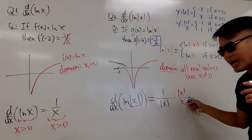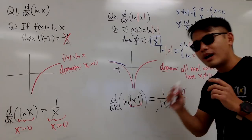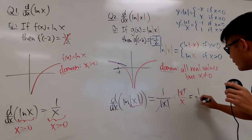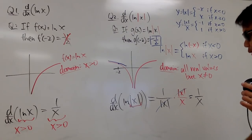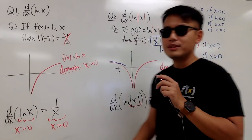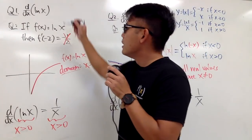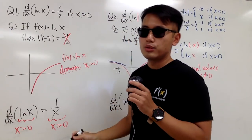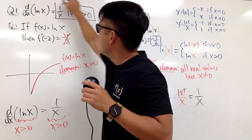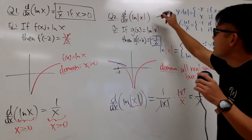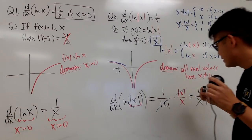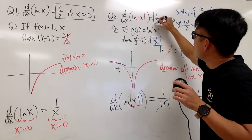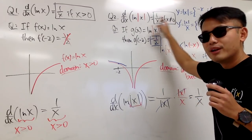So putting it together: the derivative of ln of absolute value of x gives 1 over absolute value of x, multiplied by absolute value of x over x. The absolute values cancel, and you get 1 over x. So the derivative of ln of absolute value of x is also 1 over x, but x can be anything except 0 — you get to use negative numbers in this situation.